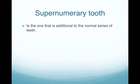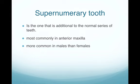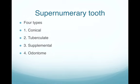Supernumerary teeth are defined as those additional to the normal series of teeth — an extra tooth. Most commonly it affects the anterior maxilla, and it is more common in males than females. Classification can be by morphology — conical, tuberculate, supplemental, and odontome — or by location: in the pre-maxilla it's called a mesiodens; near the premolar, a para-premolar; next to molars, paramolars; and distal to the last molar, a distomolar.